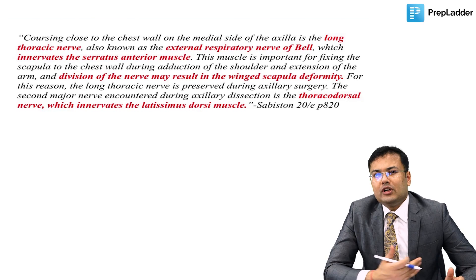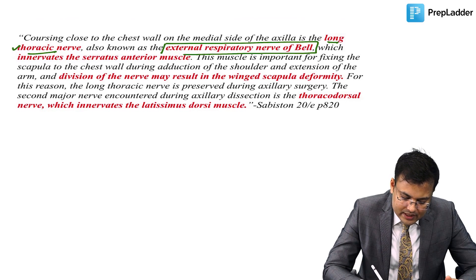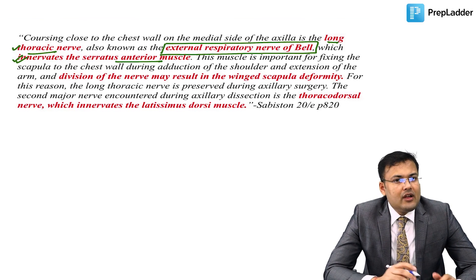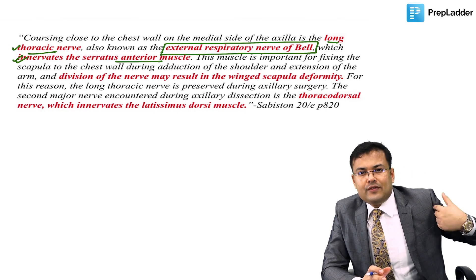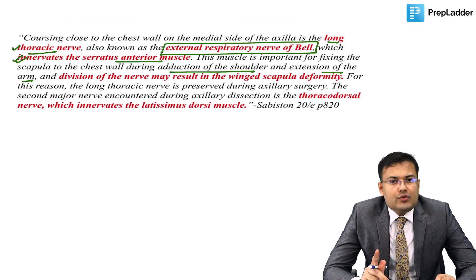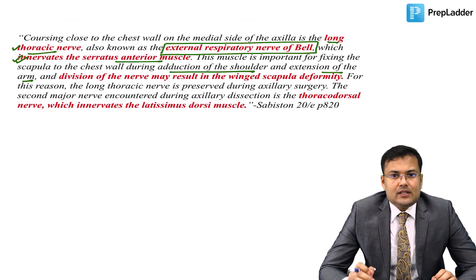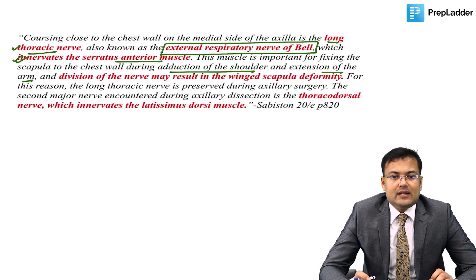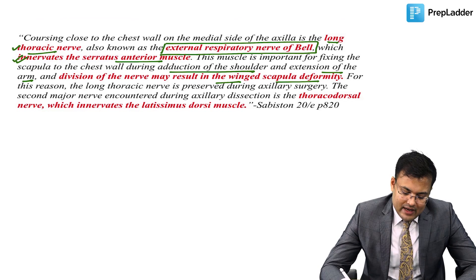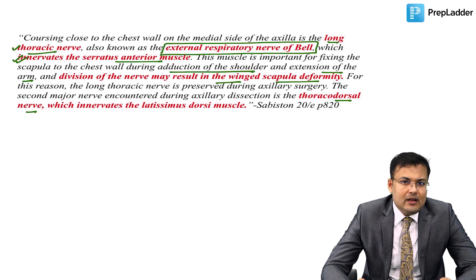The long thoracic nerve courses close to the chest wall on the medial side of the axilla. Its other name is the external respiratory nerve of Bell. It innervates the serratus anterior, which fixes the scapula to the chest wall especially during adduction of the shoulder and extension of the arm. If injured, the scapula becomes more prominent — winging of scapula.